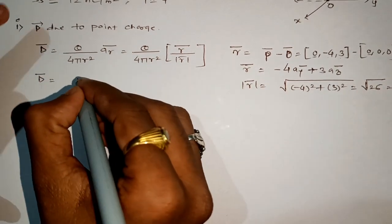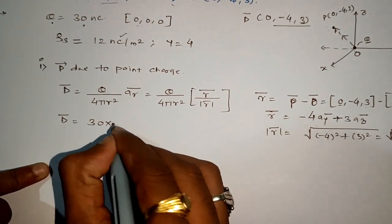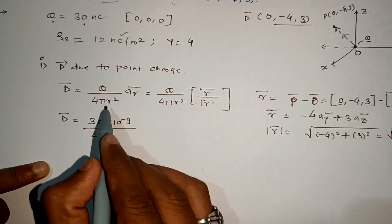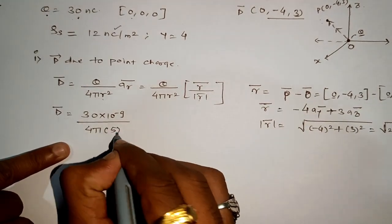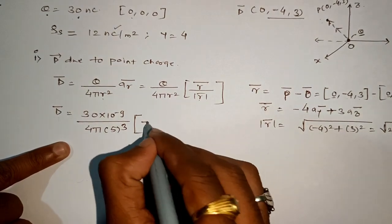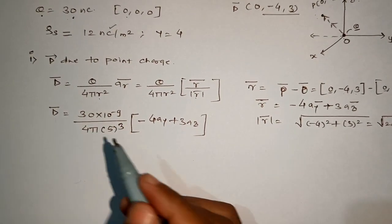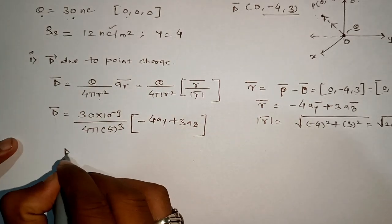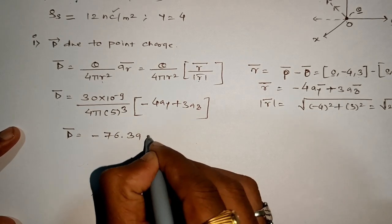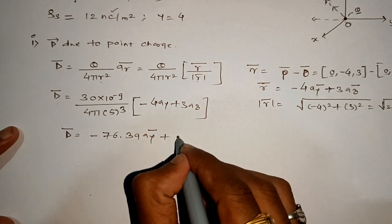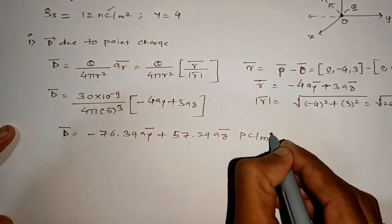Now writing D-bar due to point charge: q = 30 × 10⁻⁹, so D-bar = (30 × 10⁻⁹) / (4π × 25) × (1/5) × (-4ay + 3az). Computing these values, we get D1 = -76.39 ay + 57.29 az in picocoulombs per meter square.